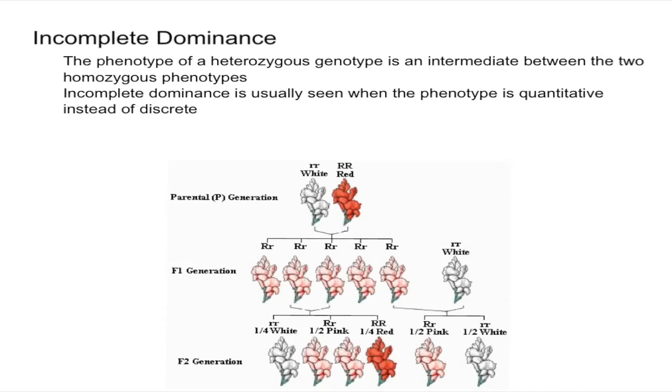You can see here homozygous dominant is going to be red, homozygous recessive is going to be white, and heterozygous snapdragons are going to be pink.